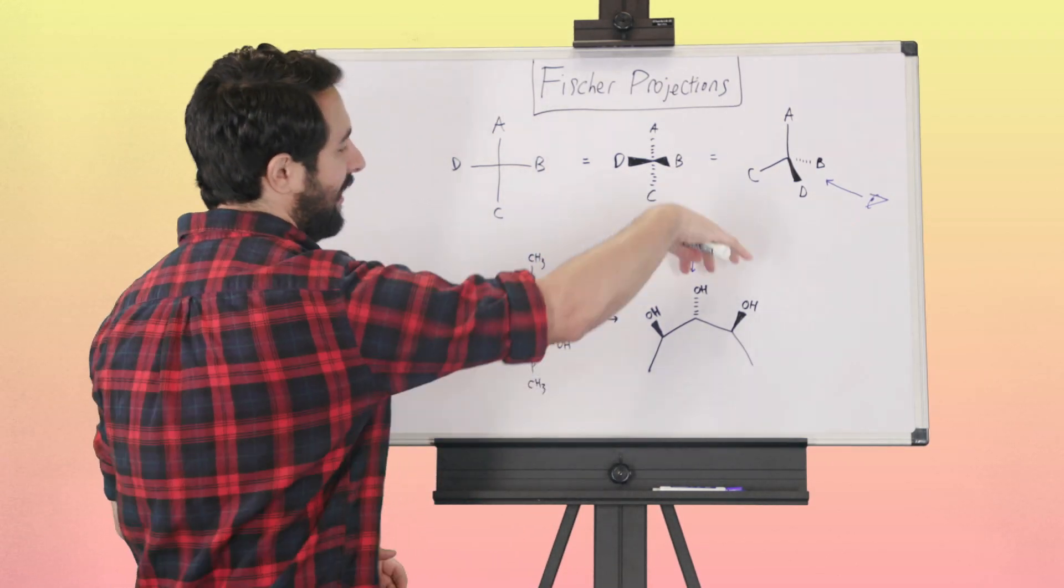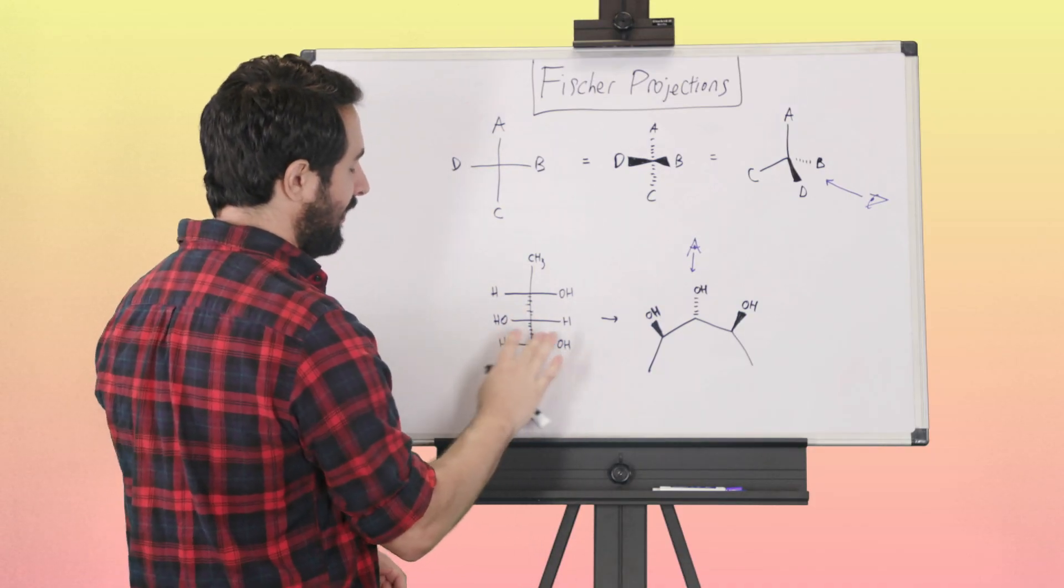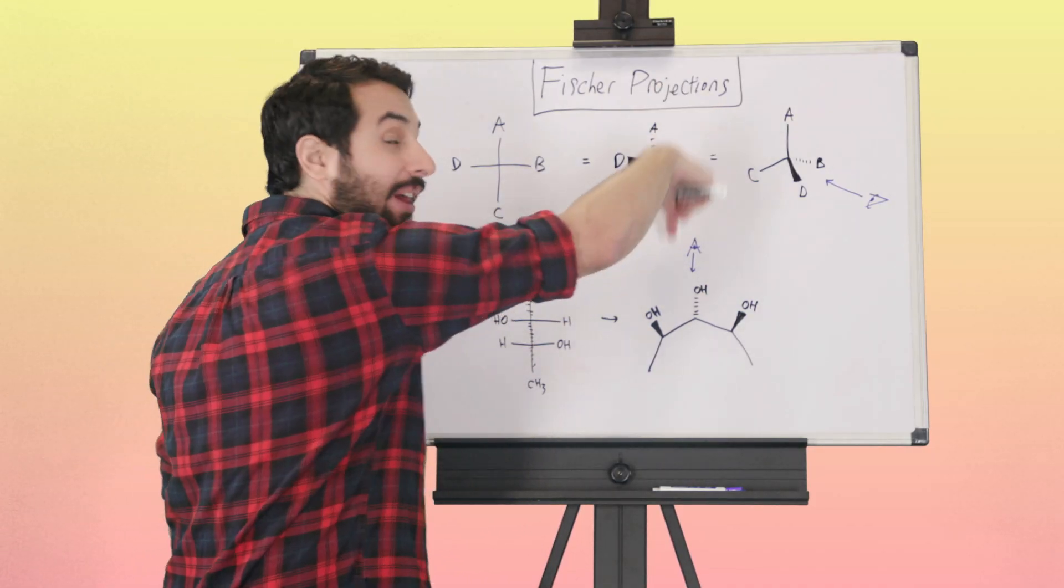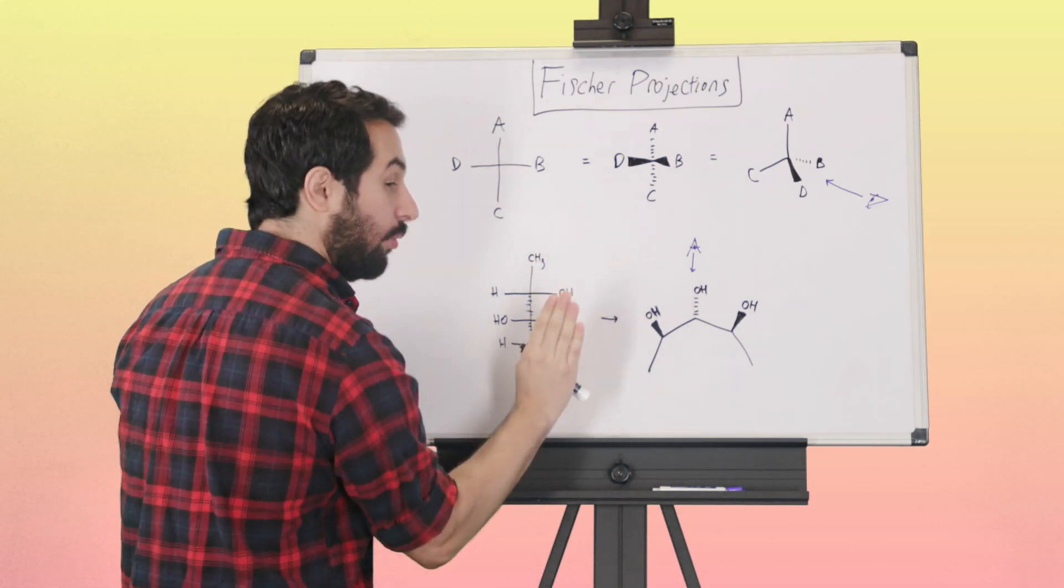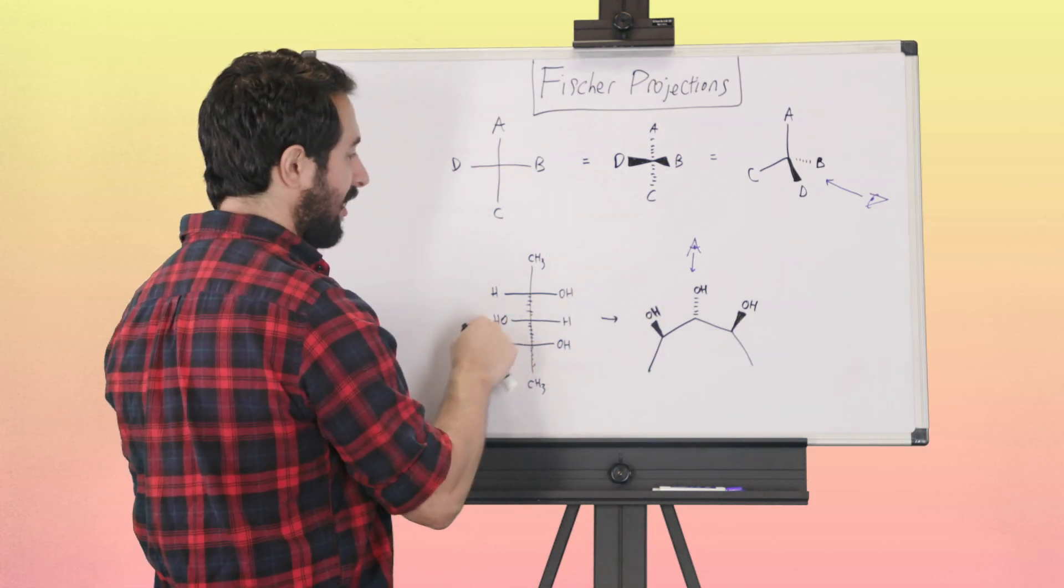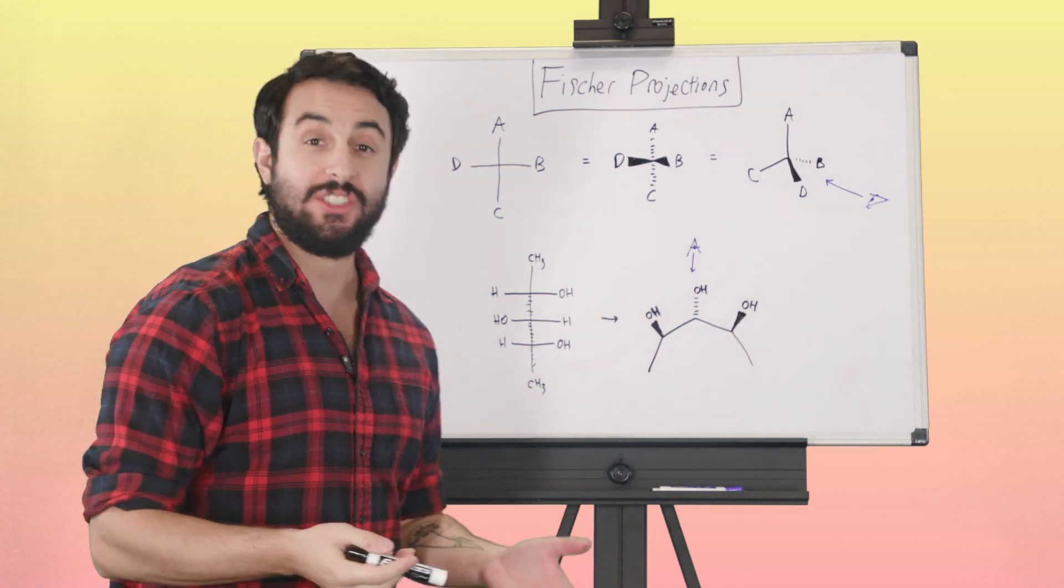If we're looking down upon this molecule, we are seeing this: we've got OH to the right, which would be the wedge; OH to the left, which would be the dash; and OH to the right, which would be the wedge.